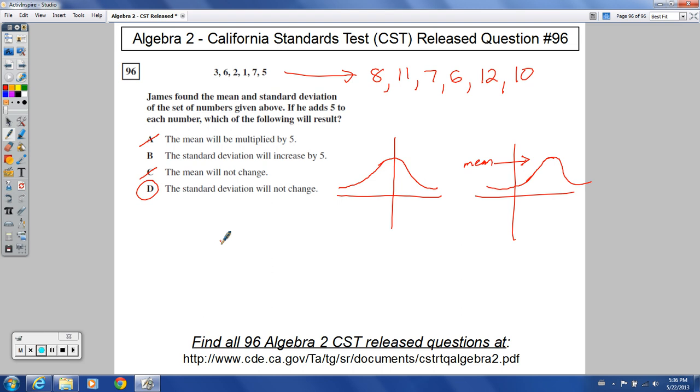Number 96, that's it. Go get your Kleenex. Cry some tears. Tears of bittersweet joy. Number 96, choice D.